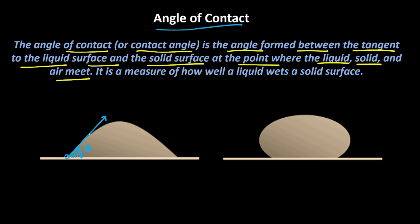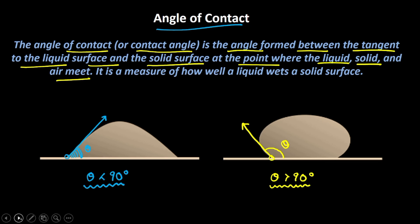As you can clearly see in the first case, the angle of contact theta is less than 90 degrees — it is an acute angle. In the second situation, the tangent at the point where liquid, solid, and air intersect gives an angle of contact theta that is greater than 90 degrees — an obtuse angle.